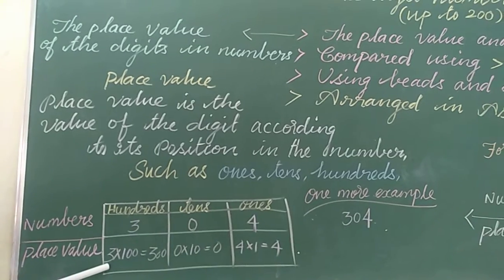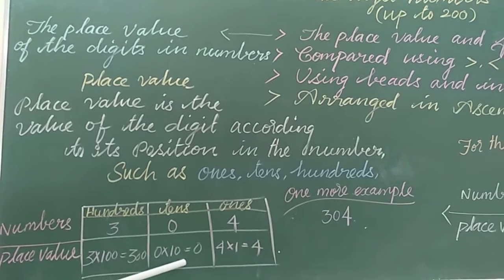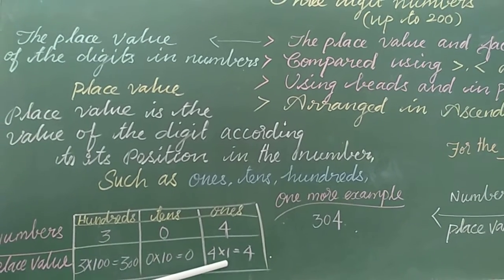Do you understand, children? What's place value? 3 into 100 is 300, 0 into 10 is 0, and 4 in 1 is 4.